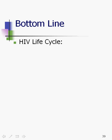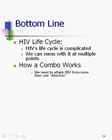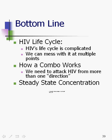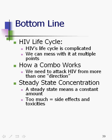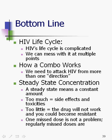Here are the bottom line issues. The HIV life cycle is complicated, and we can and do mess with it at multiple points. Combinations work — meds working together to attack HIV from multiple directions. Steady state means a constant amount: not too much, not too little. The ultimate goal is to have meds in the body constantly, so that HIV never gets a chance to reproduce. That's the end of our slideshow. Please join us for the next lesson — take care, bye-bye.